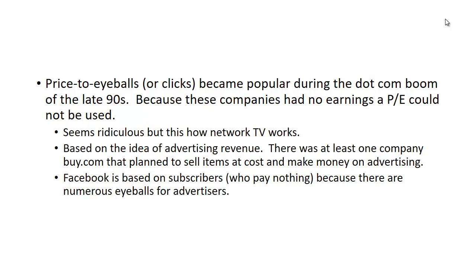There's another multiple that popped up in the late 90s: price-to-eyeballs or clicks. This was very popular during the dot-com boom because these companies had no earnings. If you have no earnings or negative earnings, a price-to-earnings ratio can't be used — it'll give you a negative number, or if you have zero earnings, you can't divide by zero. At first glance this seems ridiculous, but this is really how network TV works.